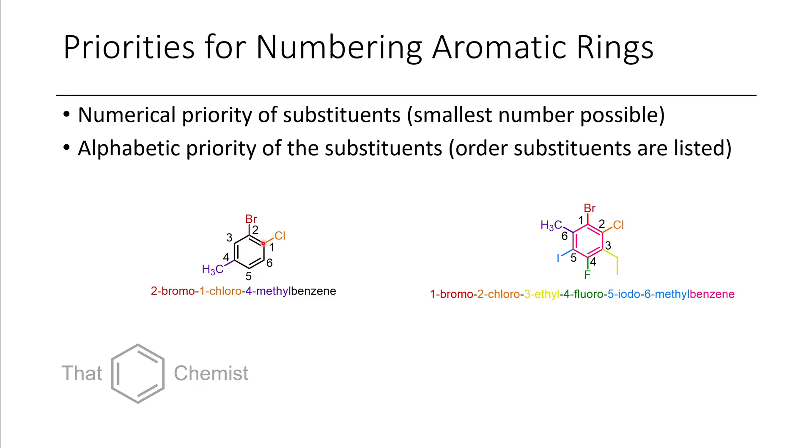If we look at starting with the chlorine in the one position, we have 1, 2, 3, 4. 1 plus 2 is 3, 3 plus 4 is 7. That would give us the lowest overall number. Hence, naming is started at the chlorine substituent.